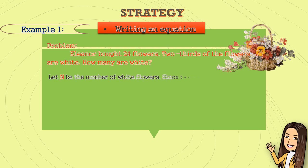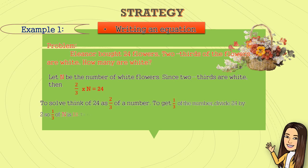Let n be the number of white flowers. Since two-thirds are white, then two-thirds times n equals 24. To solve, think of 24 as two-thirds of a number. To get one-third of the number, divide 24 by 2. So, one-third of n is 12. To find n, add 24 and 12. The answer is 36.